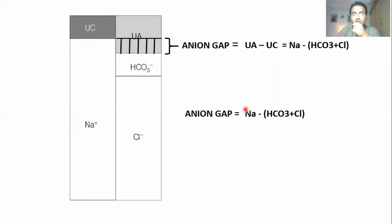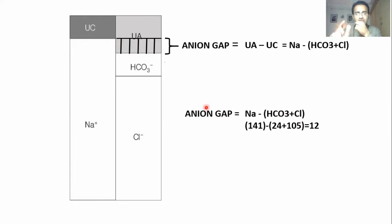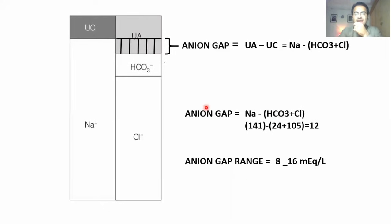If we put in the values — sodium 141, bicarbonate 24, chloride 105 — and solve the equation, our answer will be 12, which is the normal anion gap. The normal range of anion gap is from 8 to 16 milliequivalents per liter.